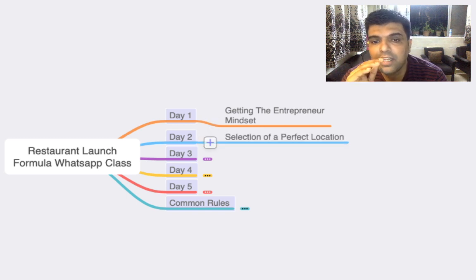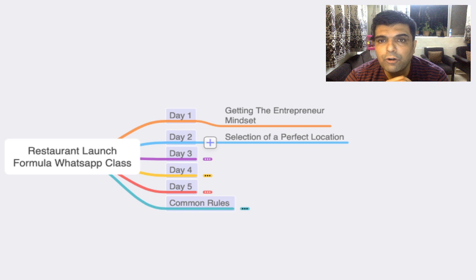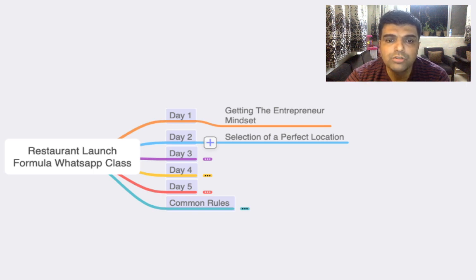The second thing which I cover is selecting a perfect location for your restaurant. Location is by far one of the biggest deciders of whether your restaurant is going to succeed or whether it is going to fail. So make sure you go through those videos. All these videos are pre-recorded.